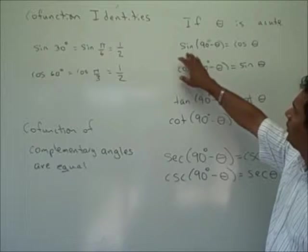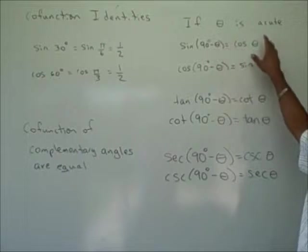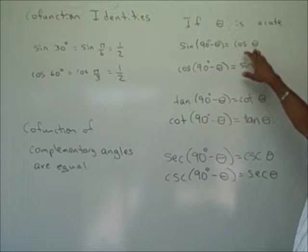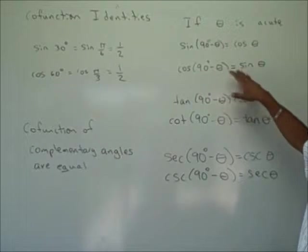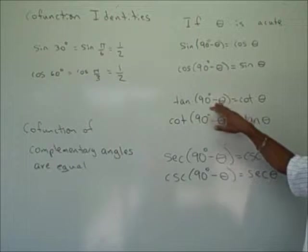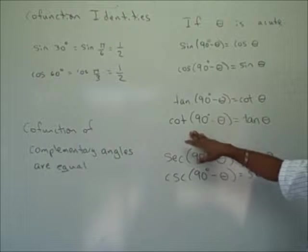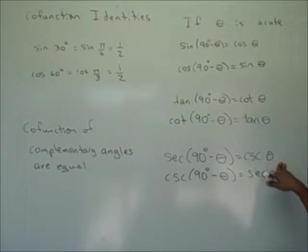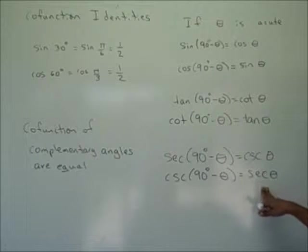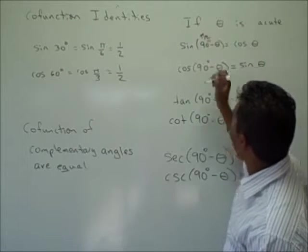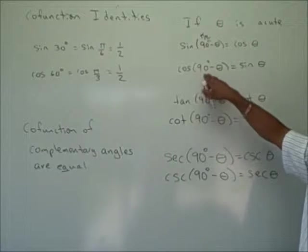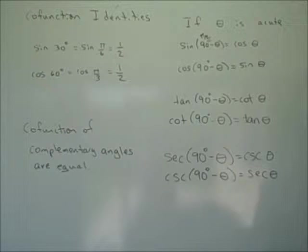Summarizing the co-function identities: sine of (90° − θ) equals cosine of θ, and cosine of (90° − θ) equals sine of θ. Similarly, tangent of (90° − θ) equals cotangent of θ. Secant of (90° − θ) equals cosecant of θ, and cosecant of (90° − θ) equals secant of θ. All these measurements are in degrees, but we can replace 90° with pi over 2 to use radians: sine of (π/2 − θ) equals cosine of θ, and cosine of (π/2 − θ) equals sine of θ.